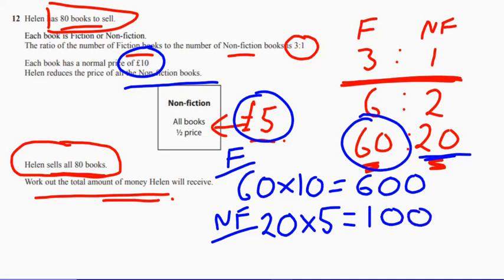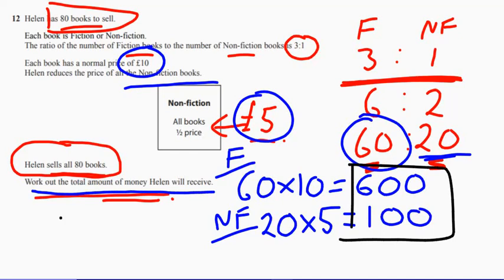So we've got the total amount of money that Helen will receive. She will receive £700. There we go.